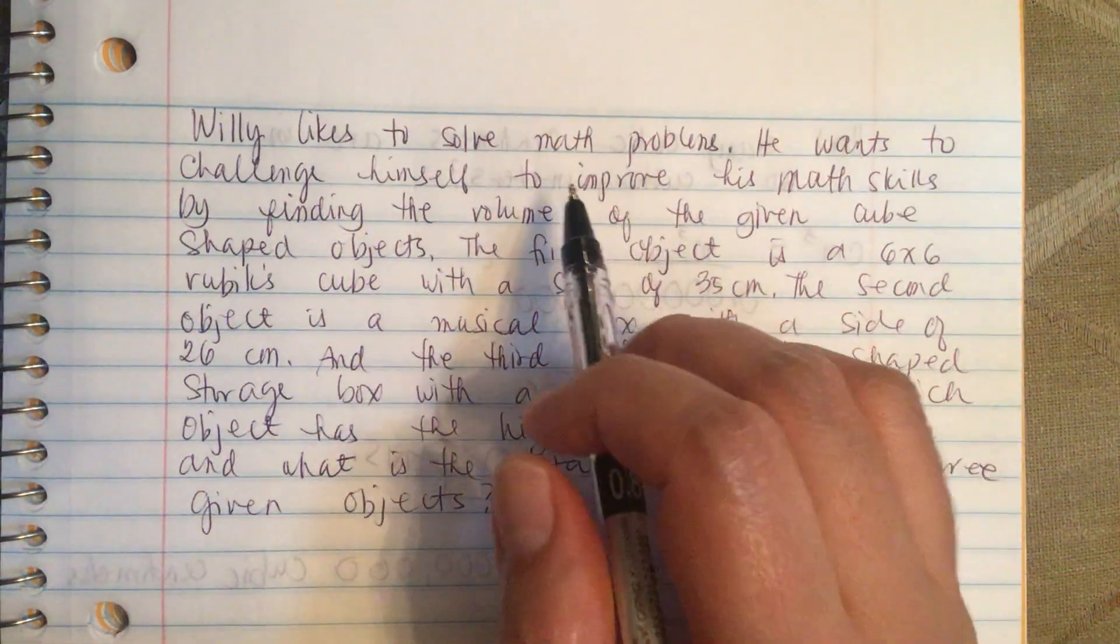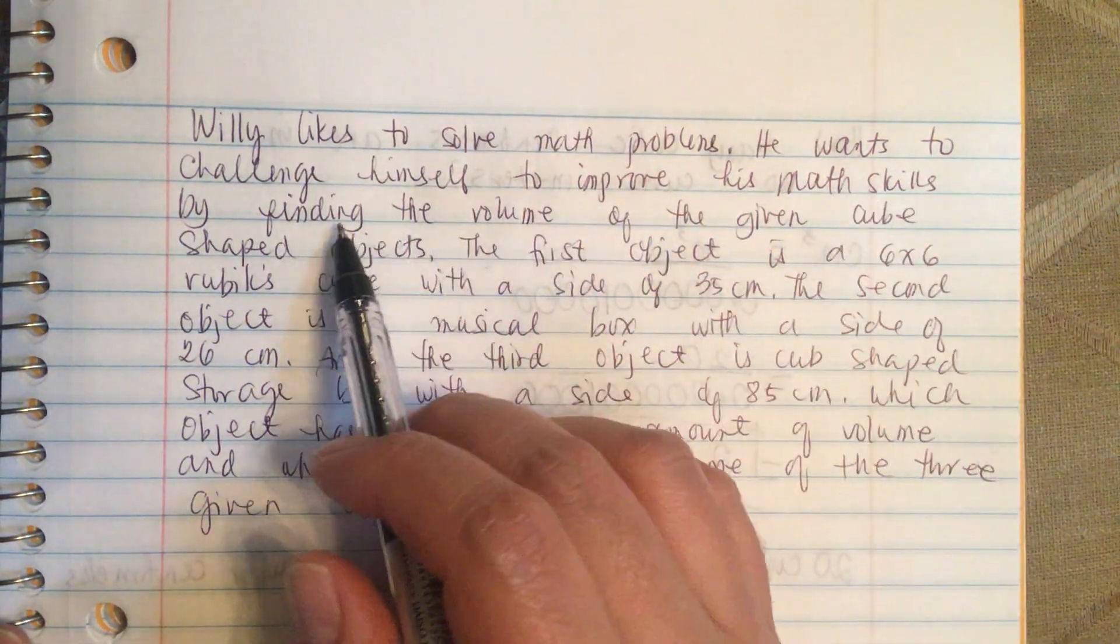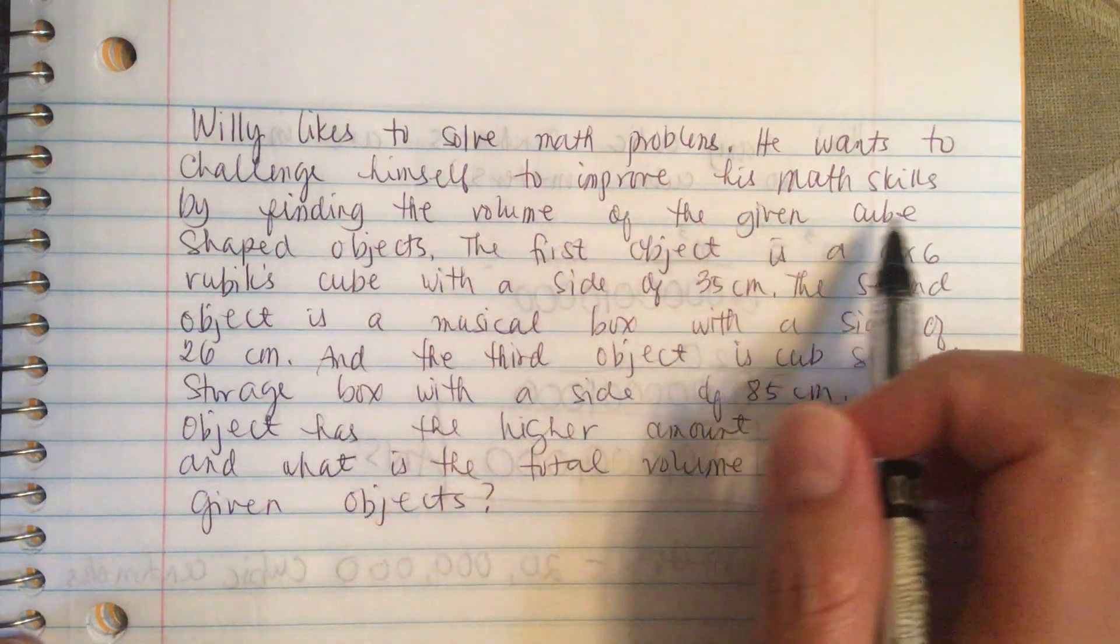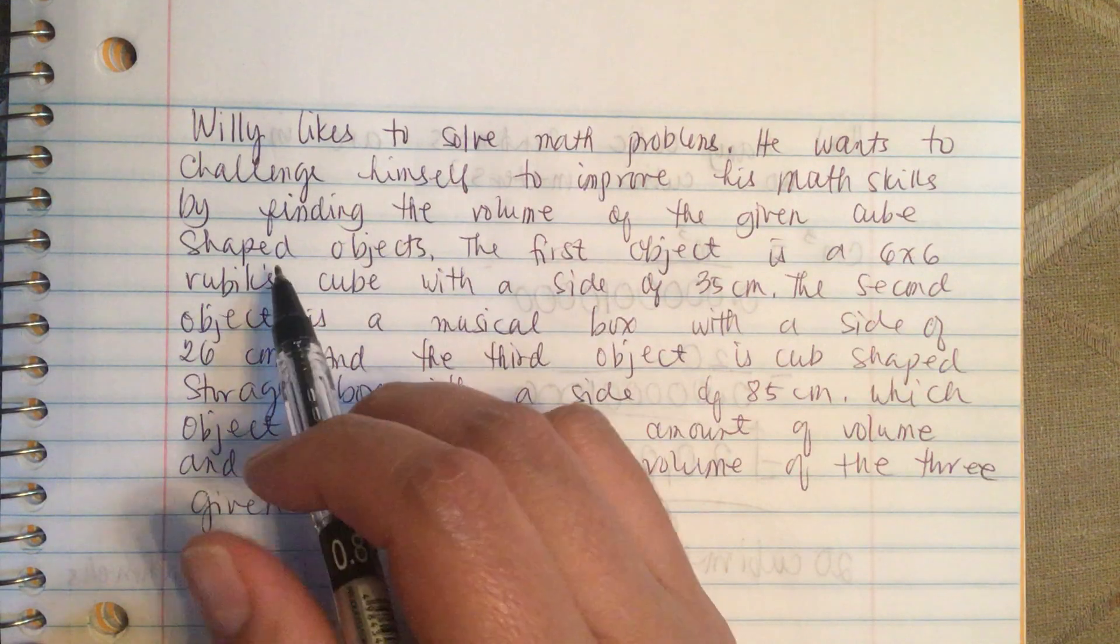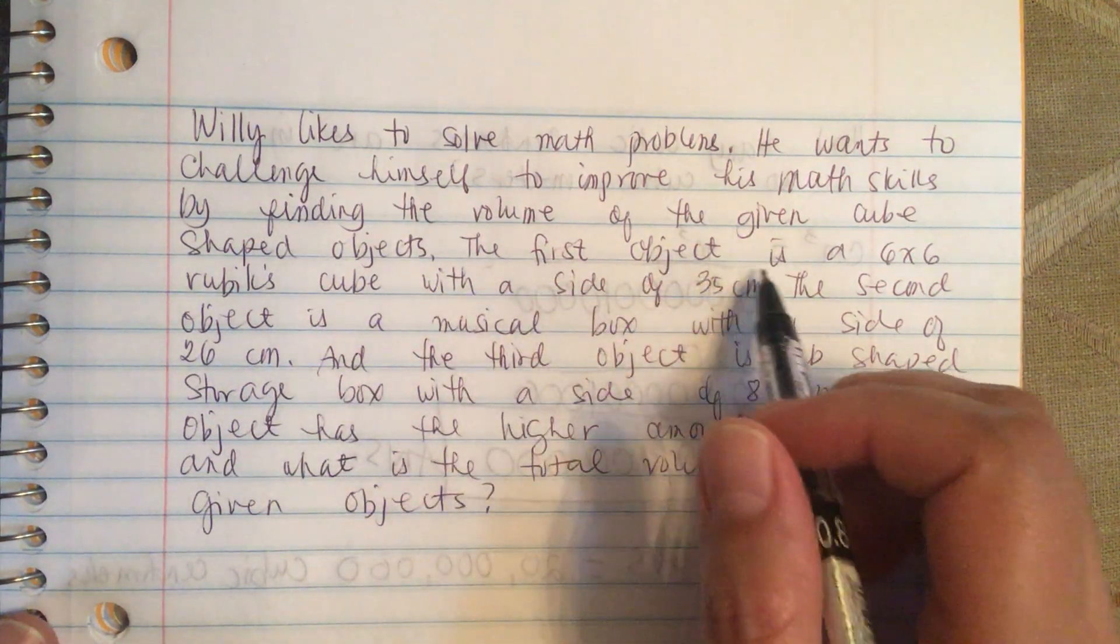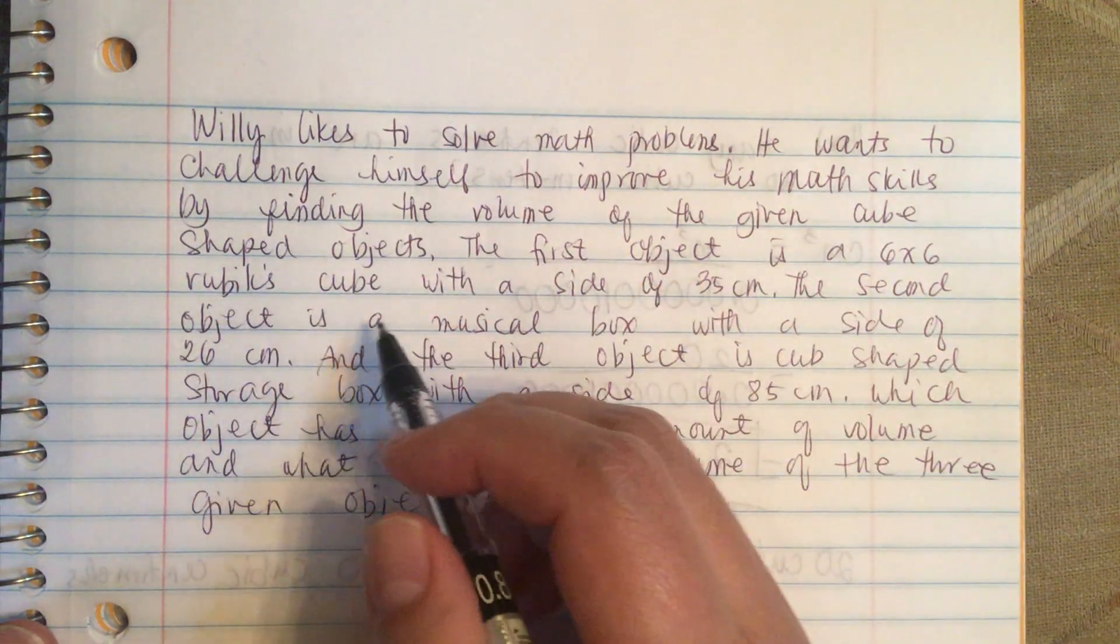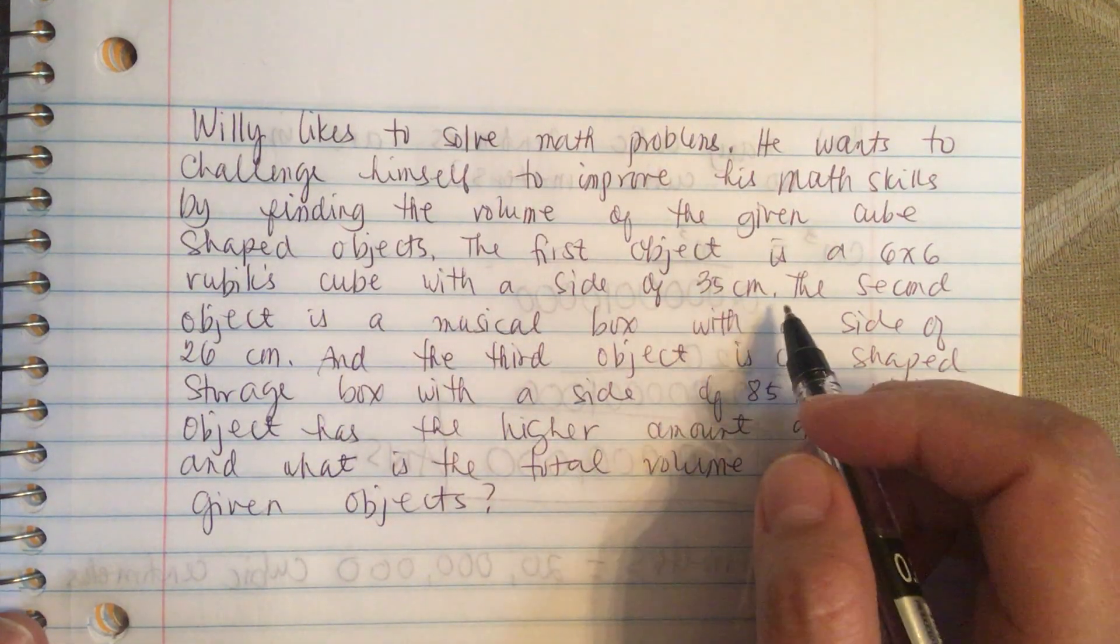Willie likes to solve math problems. He wants to challenge himself to improve his math skills by finding the volume of the given cube shape objects. The first object is a six by six Rubik's cube with a side of 35 centimeter.